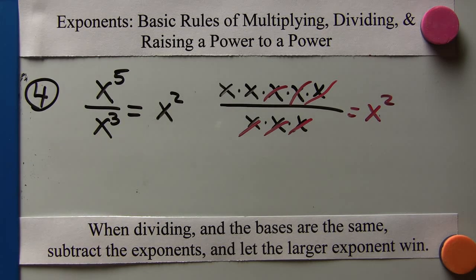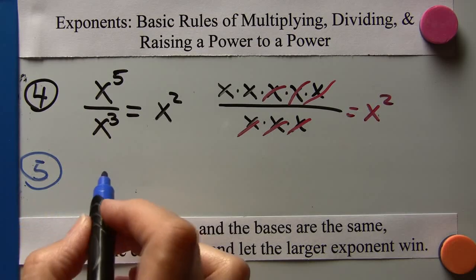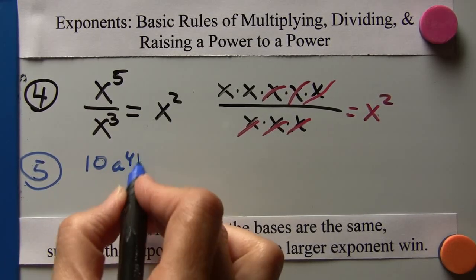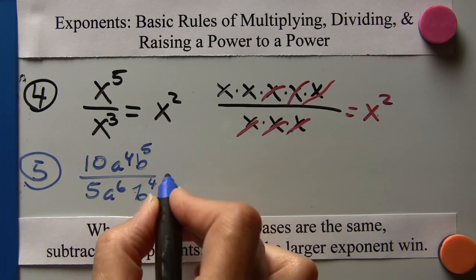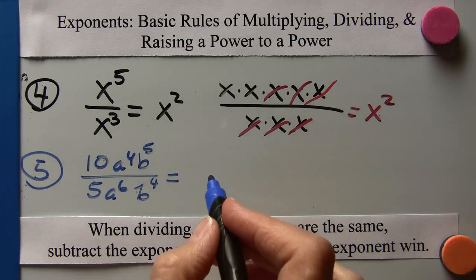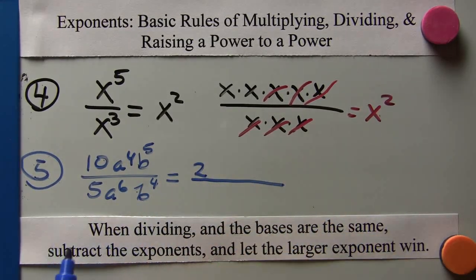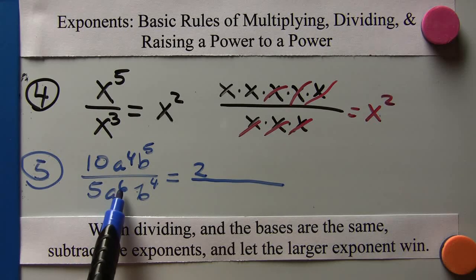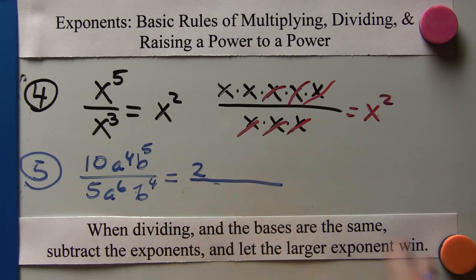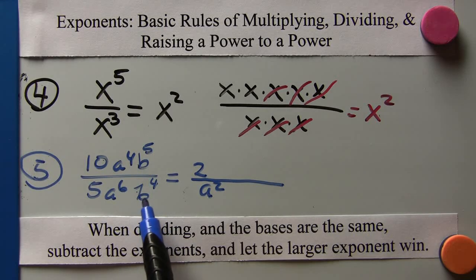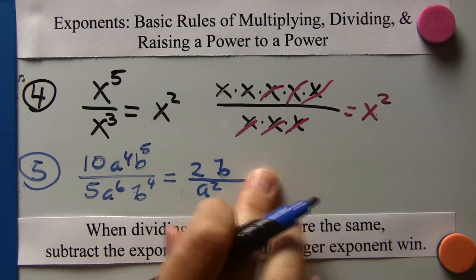Let's try 10a to the fourth b to the fifth over 5a to the sixth b to the fourth. For the coefficients, it's regular division: 10 over 5 is 2. For the a's, I have a to the fourth on top and a to the sixth in the denominator; subtract — 6 minus 4 is 2, and 6 is larger, so it's a squared in the denominator. For the b's, subtract — 5 minus 4 is 1, and the 5 is larger, so it's b to the first in the numerator. The answer is 2b over a squared.